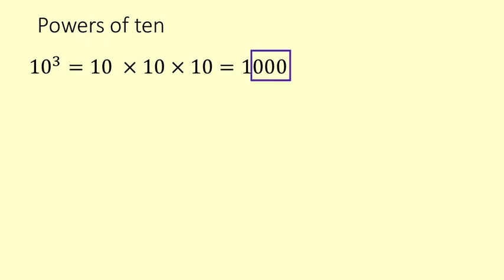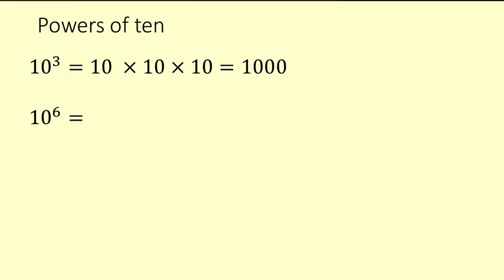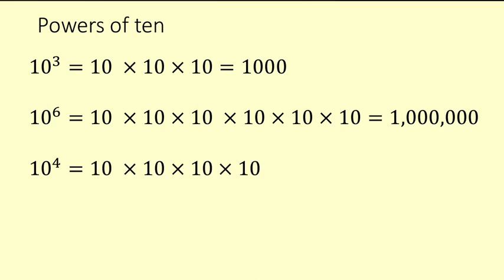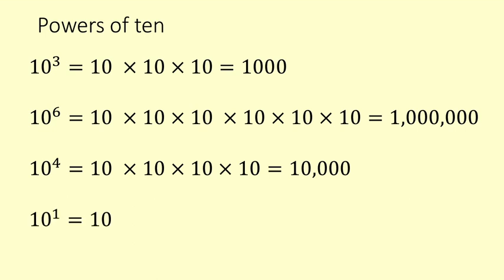Notice that there are three zeros after the 1. Then 10 to the power of 6 is 10 times 10 times 10 times 10 times 10 times 10, which is 1 million — you can see there are 6 zeros after the 1. Those zeros act as placeholders. And 10 to the 4 is 10,000, and 10 to the 1 is 10.